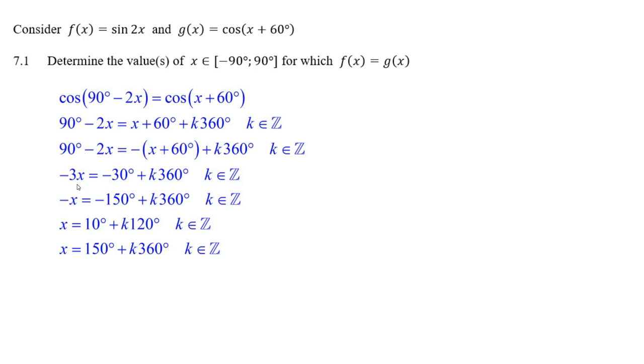We minus x from minus 2x, we get minus 3x. We minus 90 from 60, we get minus 30. Then we divide everything by negative 3, and we get x equals 10 degrees.